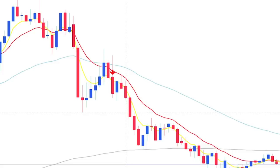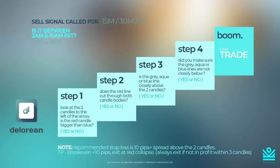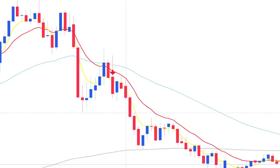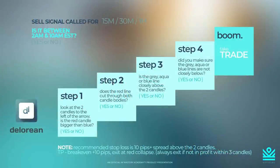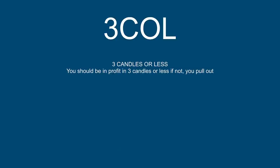So do we take this trade? Step one was yes — the red was bigger than the blue. Step two was yes — the red line cut through both candle bodies. Step three was yes — the aqua was cutting through both. Step four was yes — we had room. We get four yeses. Boom — you take the trade.